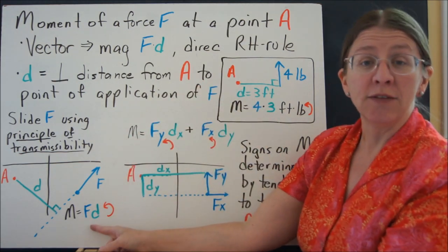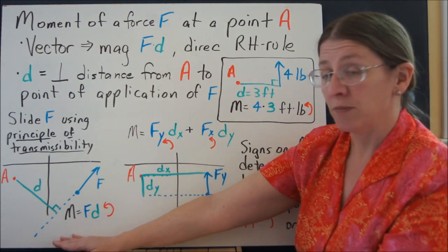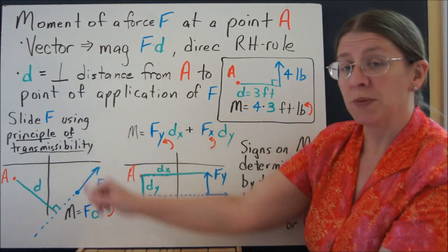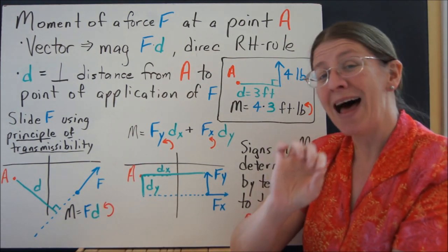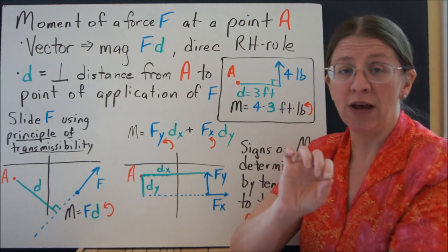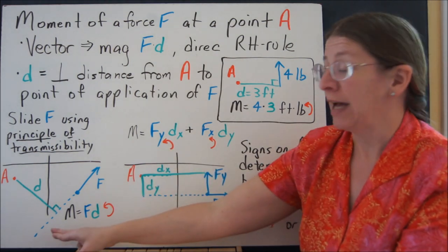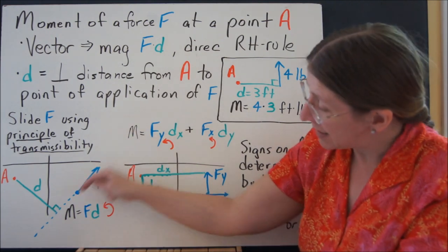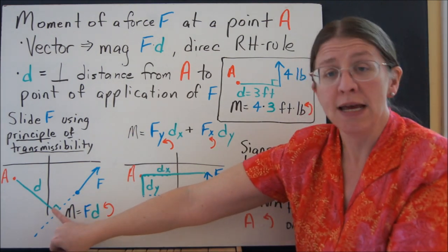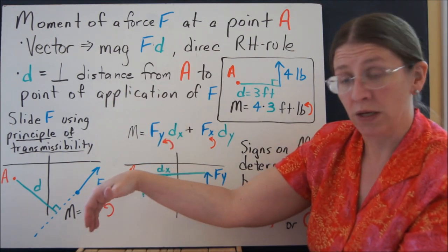Oftentimes though you're not given something that's quite that straightforward. When you're looking at a system like this, we need to use the principle of transmissibility. The principle of transmissibility says that you can slide a force along its line of action to anywhere else on the body you're considering, as long as you slide it along its line of action and you don't move it off the body. So if I slide this force down to where it actually hits that D, I can still do moment is F times D. And it will still be counterclockwise.